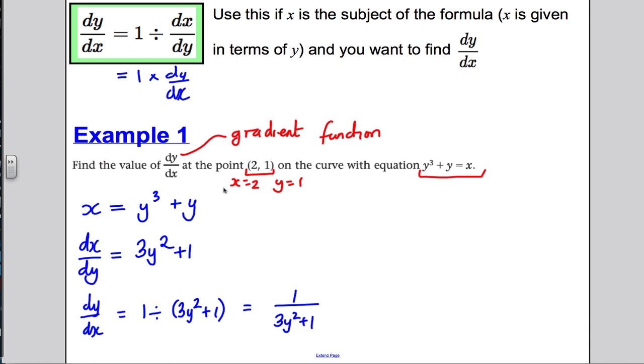And therefore, you have your dy by dx. Now, it's in terms of y's. There's no real problem with that at all because you were asked to find dy by dx at the point x is 2, y is 1.